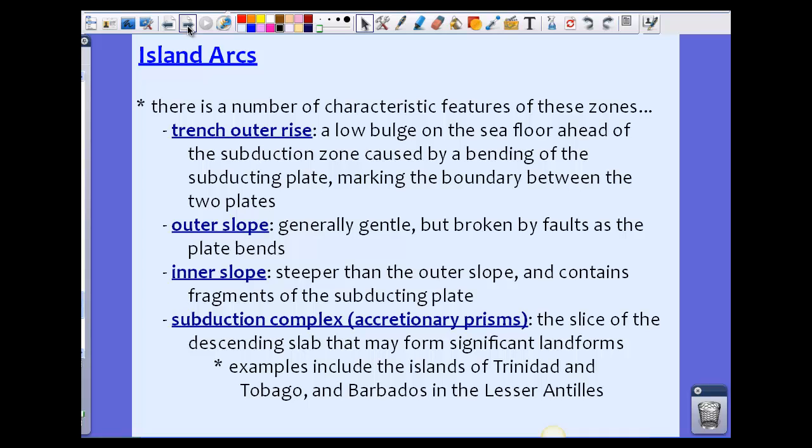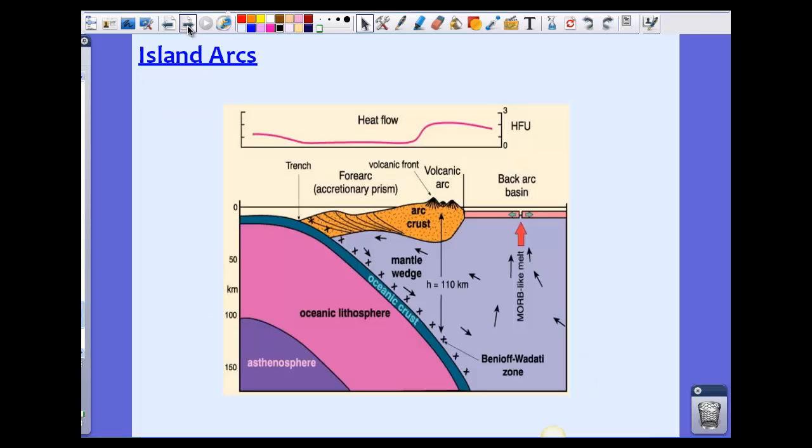We also see something called a subduction complex, which is the accretionary prism. This is the slice from the descending slab that may form significant landforms. In some cases, examples in the western Atlantic around the Lesser Antilles, the islands of Trinidad and Tobago and Barbados are actually formed because of this accretionary prism.